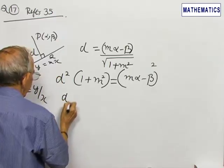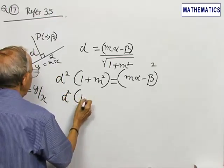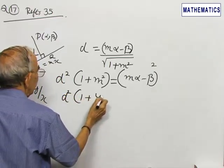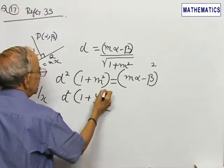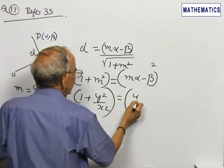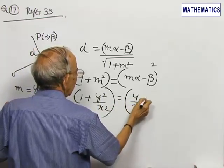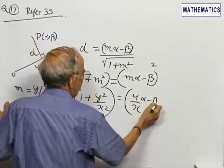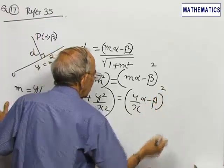So D square into 1 plus y square by x square is equal to y by x alpha minus beta whole square.